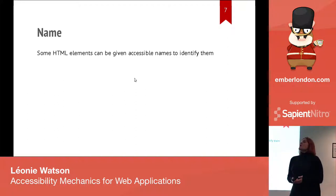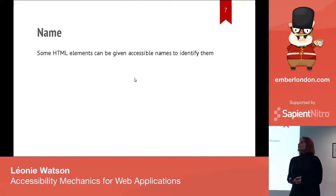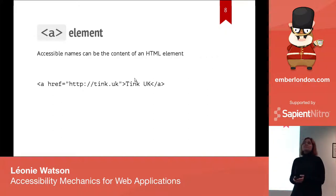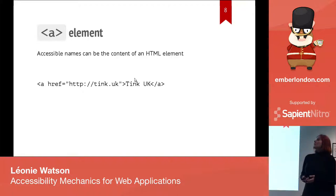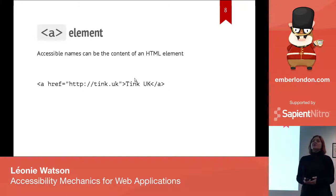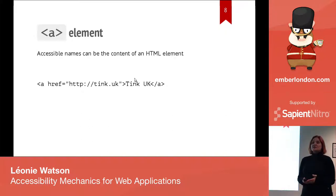When you use HTML, many elements have an accessible name. Like the names of people, an accessible name differentiates one thing from another of its kind in a web application interface. For example, if you use a link — an anchor element — the content of the link becomes its accessible name: the text or a graphic with alt text inside it. Visually, that's how you tell one link apart from another on a page, and a screen reader uses that same content to do exactly the same job for someone who can't see.